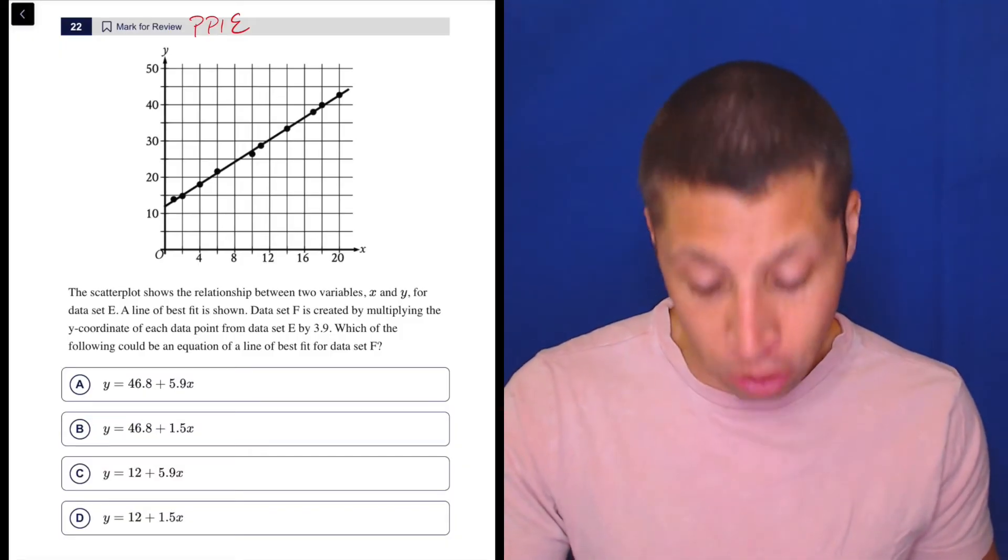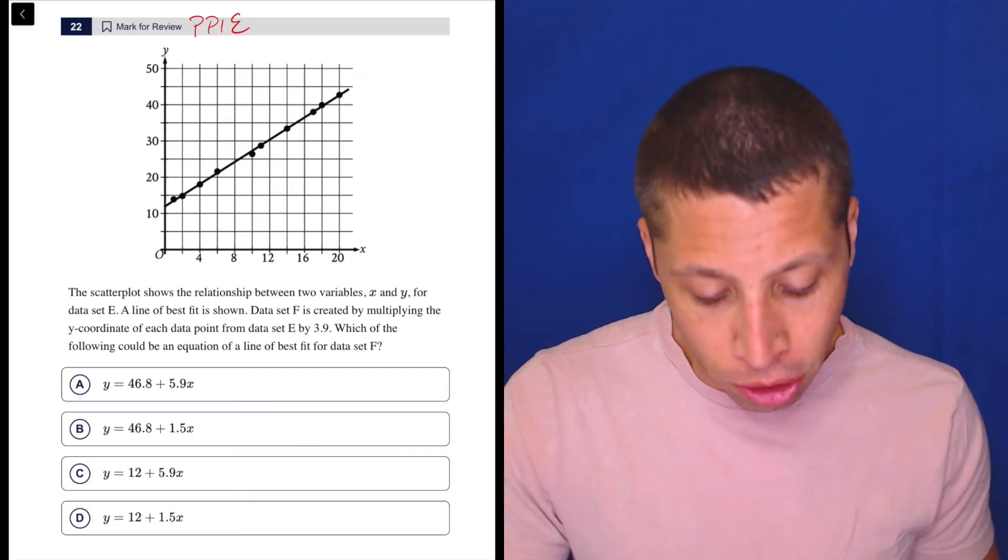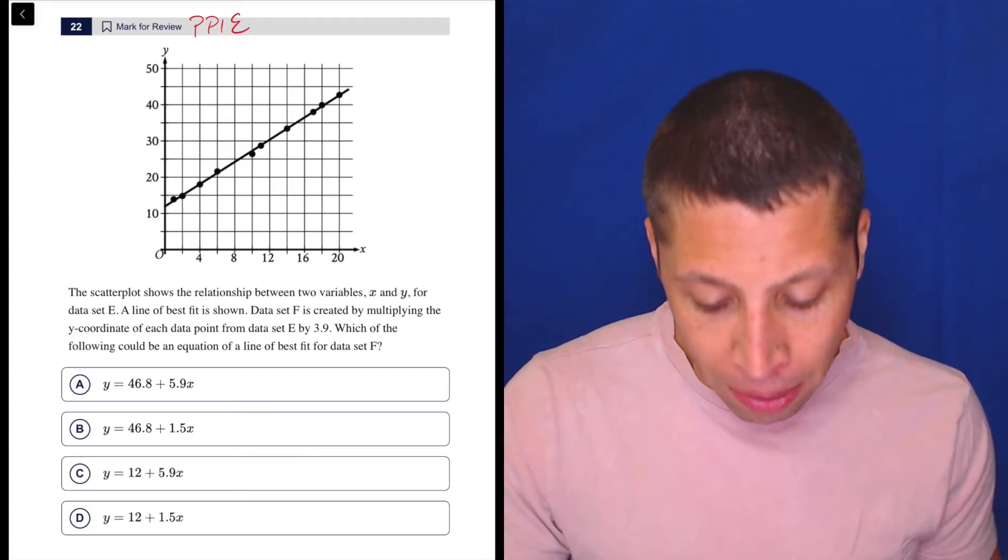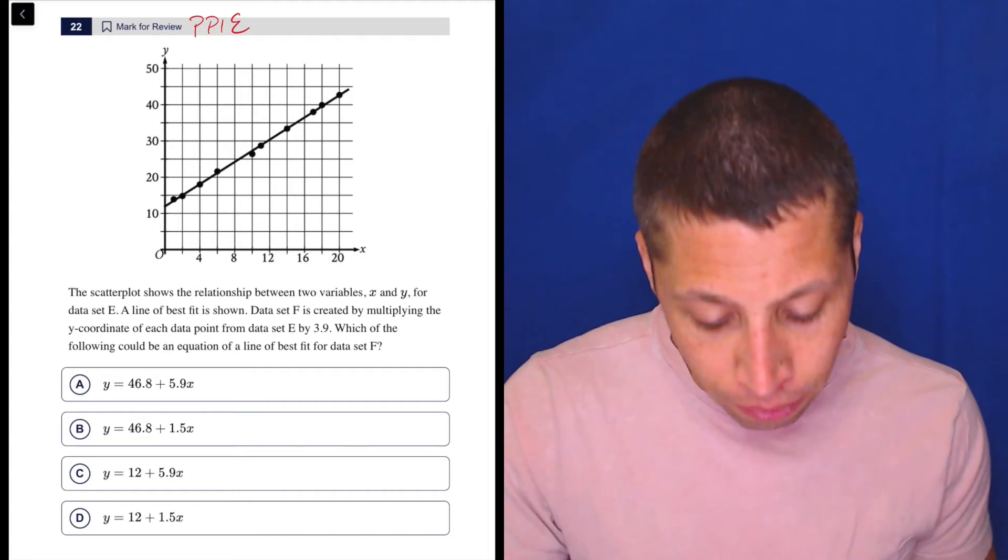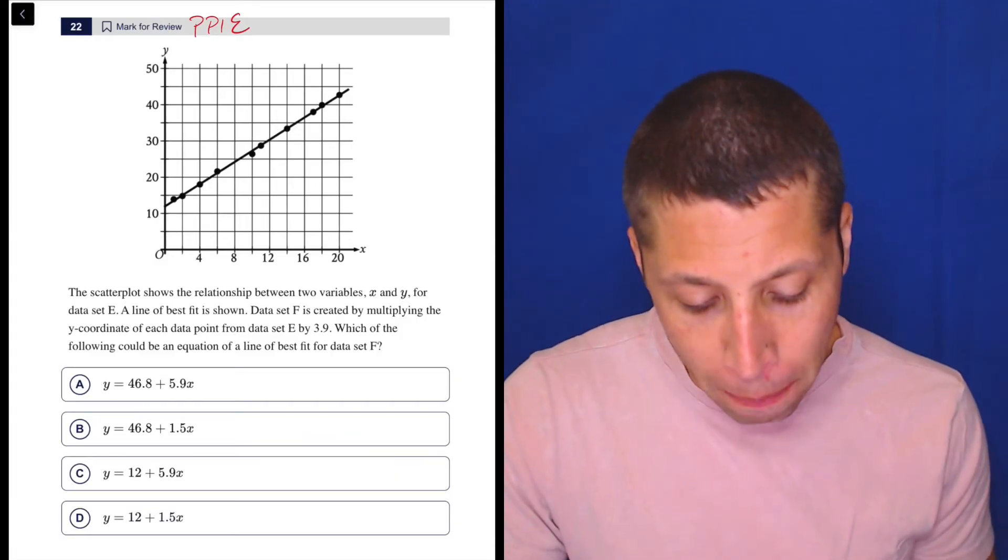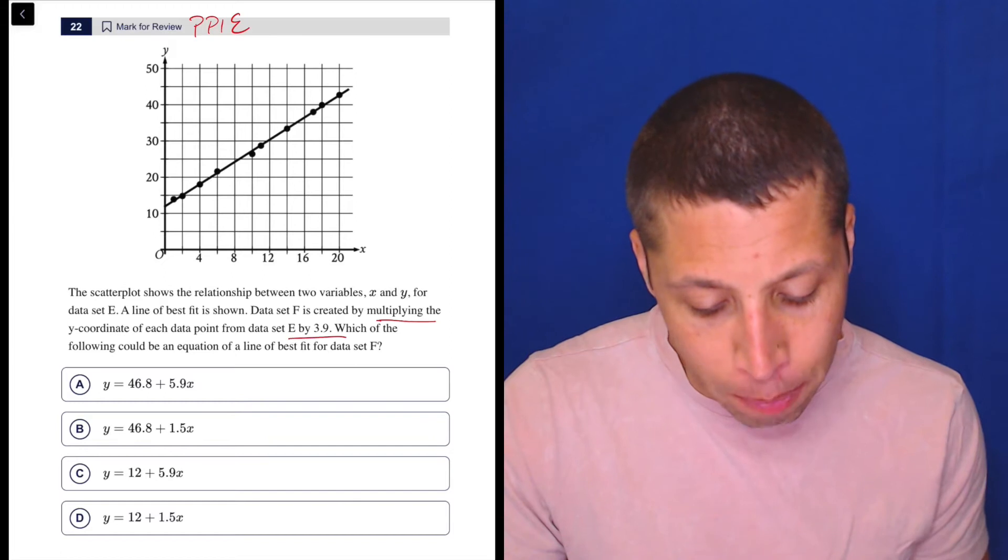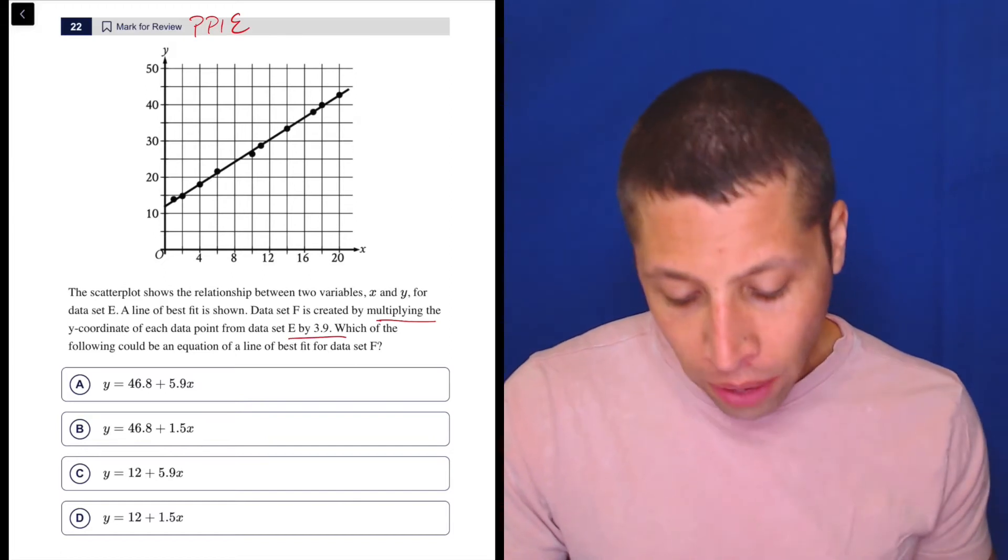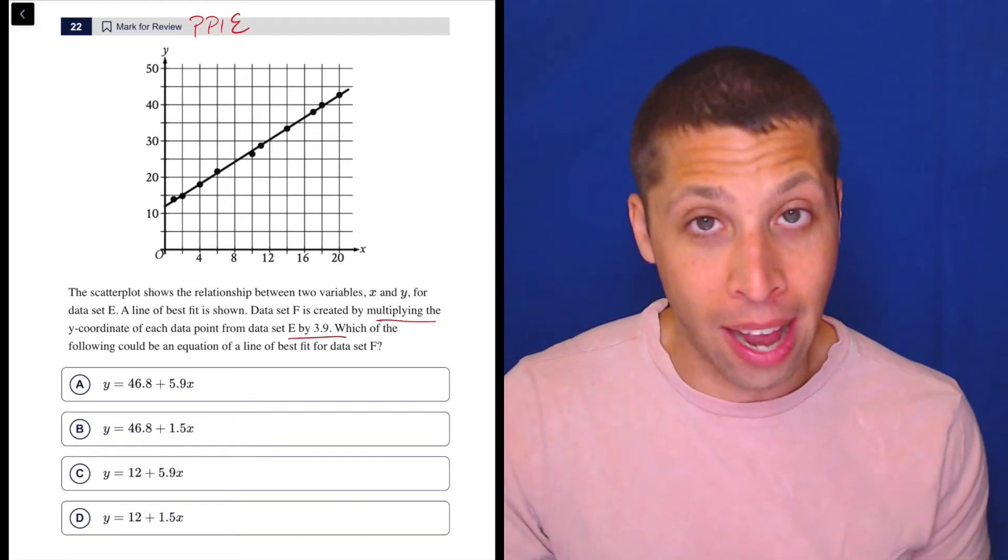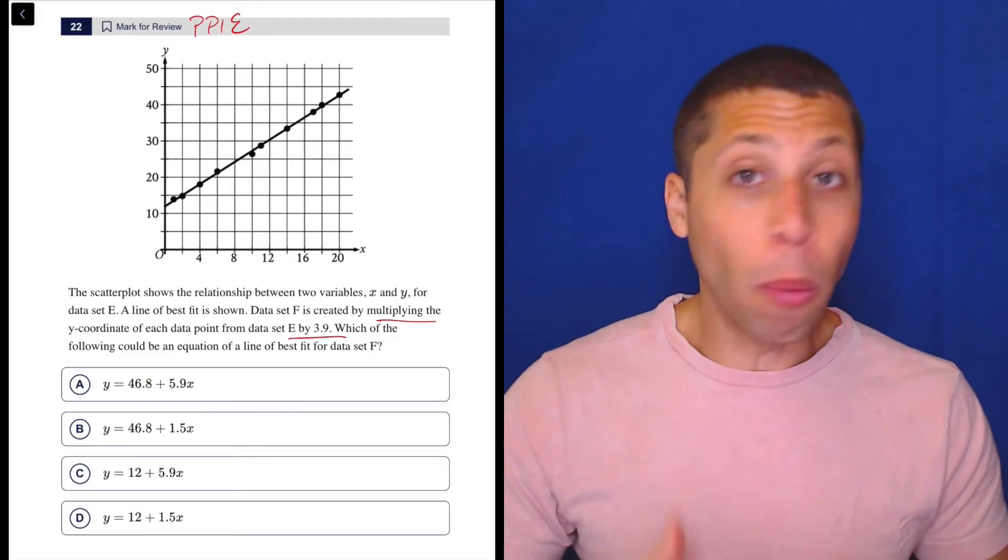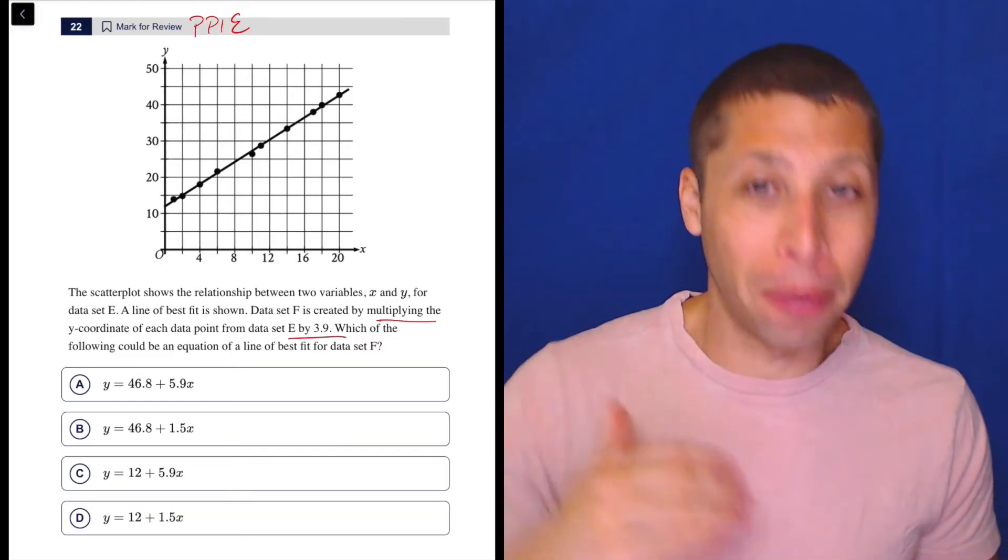By looking at this question, they're going to give us an instruction. The scatter plot shows the relationship between these variables. A line of best fit is shown. Data set F, a new data set, is created by multiplying the Y coordinate of each data point from data set E by 3.9. Which of the following could be an equation of a line of best fit for data set F? So we've got to just change these points. But we're going to approach this the same way we would any plug points into equations.